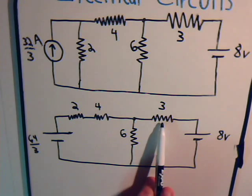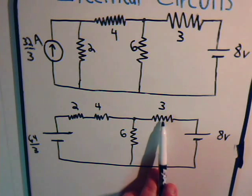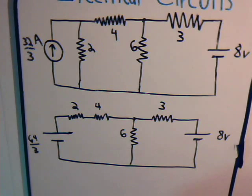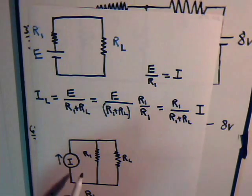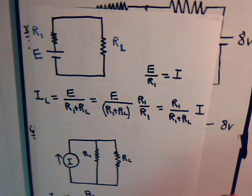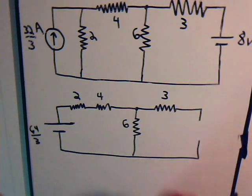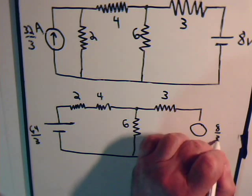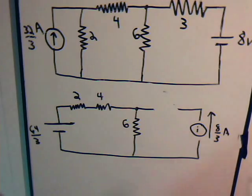Now if we convert this part of the circuit to a current source, that would put this resistor in parallel with the current source and in parallel with this resistor, so we could determine the equivalent resistance. These two circuits are equivalent provided that the current is equal to this voltage divided by that resistance. So here we would have a current source of 8 amps in this direction, and this resistor is now in parallel with the current source.